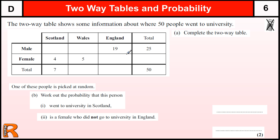This is quite a common question, and usually we need to look for a row or column that only has one space missing. This column here has one thing missing. We know the total is seven, we've got four females, so there must be three males.